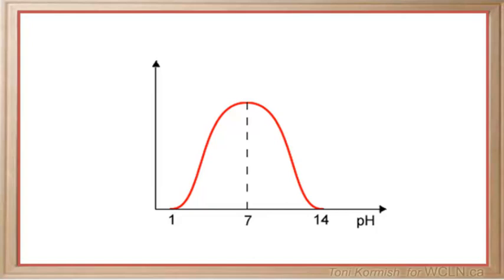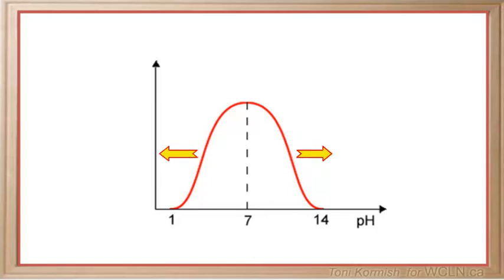Enzyme activity is also controlled by pH. As the pH is decreased or increased, changes in the overall shape of the enzyme occur if the pH is moved too far from the optimum pH for the enzyme. Again, the enzyme becomes denatured.